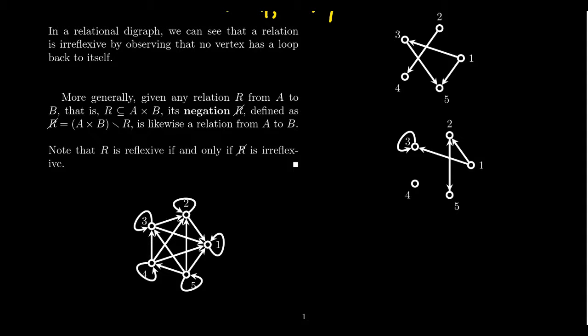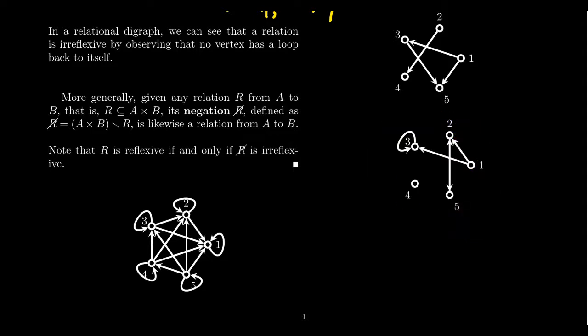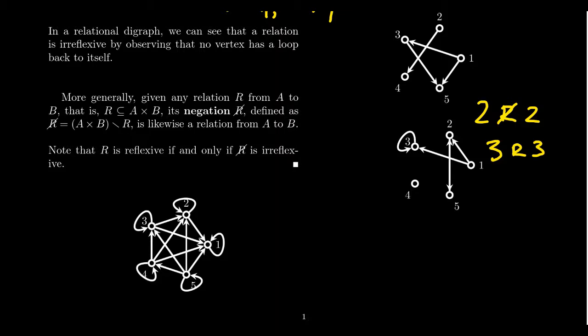A relation can be neither reflexive nor irreflexive. It's not reflexive if we don't have loops at every single vertex, but it's also not irreflexive if some loops do exist. If 2 is not related to 2 but 3 is related to 3, the relation is neither reflexive nor irreflexive. Reflexivity and irreflexivity are opposites: if you're reflexive you can't be irreflexive, and vice versa.